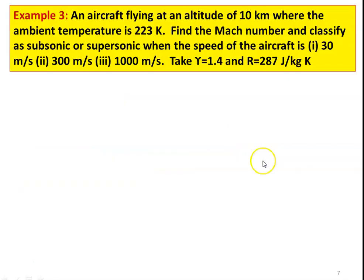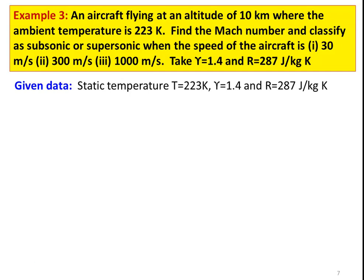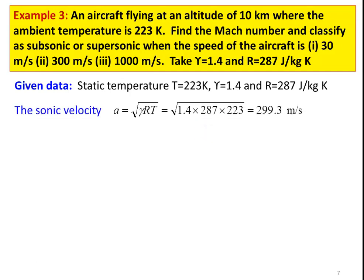Example 3: An aircraft flying at an altitude of 10 km where the ambient temperature is 223 Kelvin. Find the Mach number and classify as subsonic or supersonic when the speed of the aircraft is: 30 m/s, 300 m/s, and 1000 m/s. Take γ = 1.4 and R = 287 J/kg·K. Given: T = 223 K. Sonic velocity: A = √(γRT) = √(1.4 × 287 × 223) = 299.3 m/s.